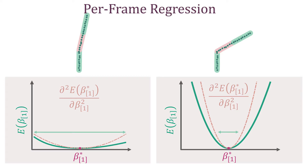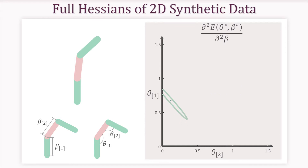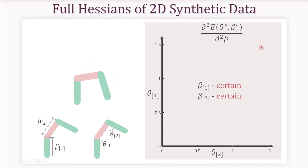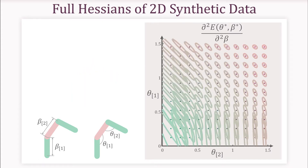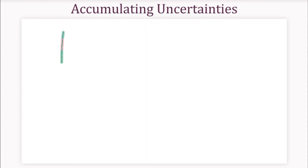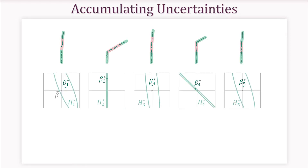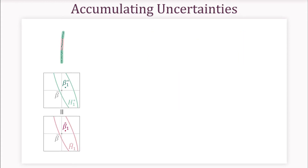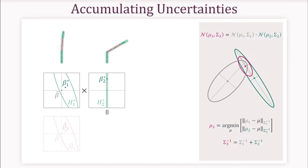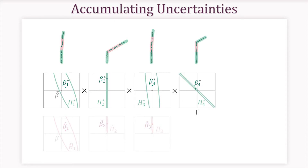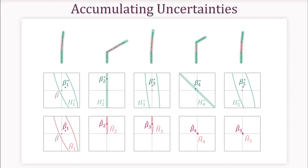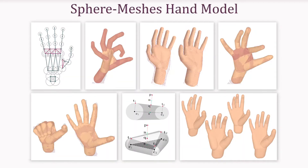In more detail, the Hessian defines a Gaussian capturing the uncertainty of the estimate. Let us look at more poses of our 2D stick figure. For a given pose, we can compute the Hessian, here illustrated with ellipses. These ellipses encode precisely the uncertainty we seek to represent. Each frame represents an estimate via a Gaussian distribution. When multiple observations of a variable are made, the cumulative probability is obtained by multiplying their distributions. Thus, estimates from different frames emerge by multiplying the corresponding Gaussians.